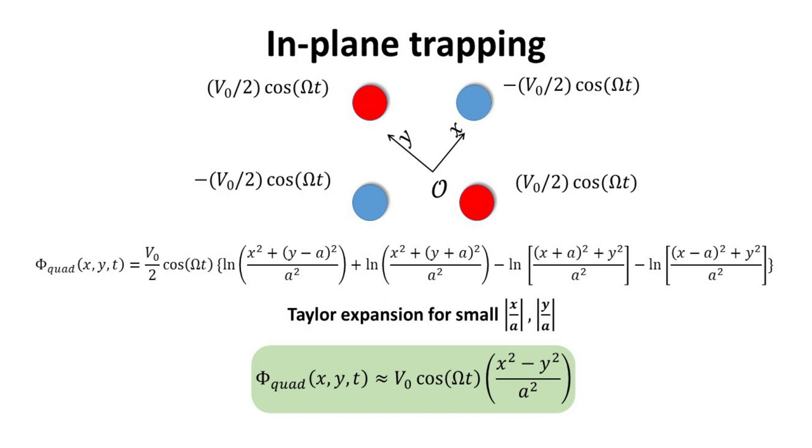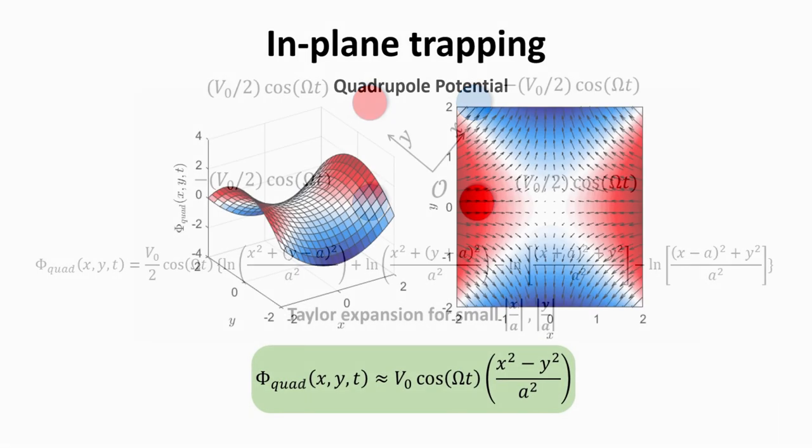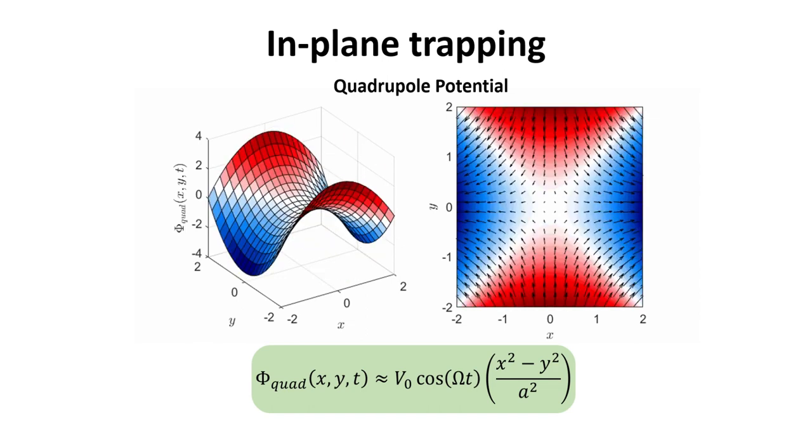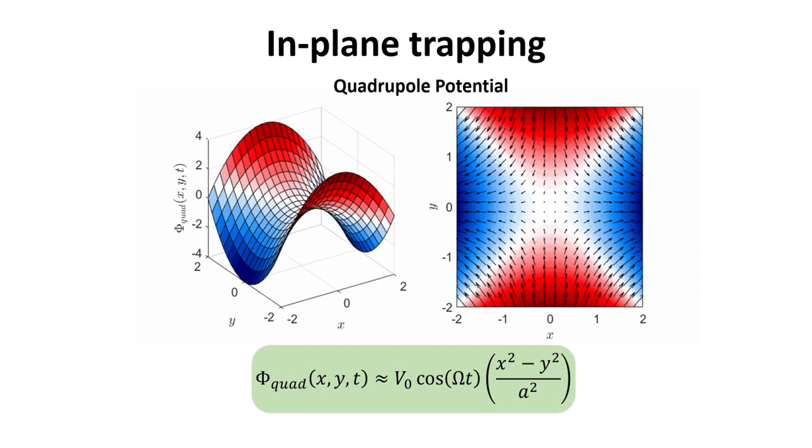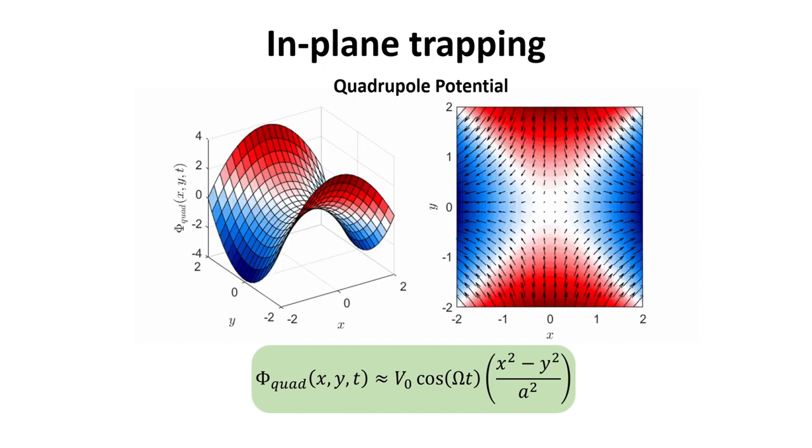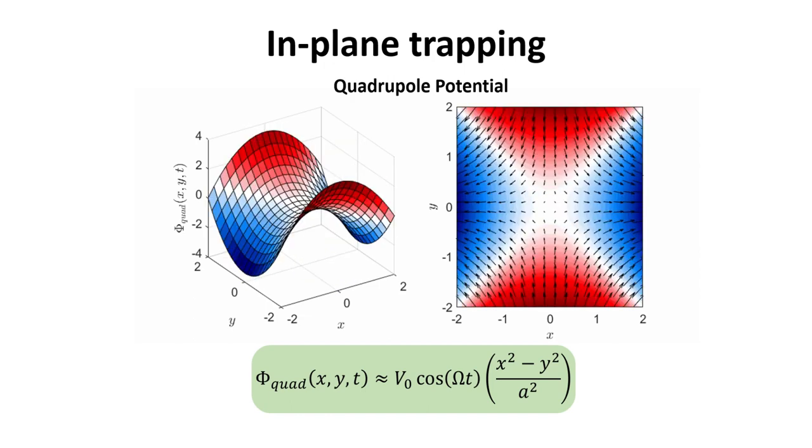Next, we perform a Taylor expansion of Φ quad for small x over A and y over A, that is, small deviations from the origin. This gives us the following potential highlighted in green. Note that the sign difference between the x and y coordinates will give the saddle-like shape to the potential. Here is a plot of the moving saddle potential Φ quad. In what follows, we will show that the equations of motion for a particle in this potential are indeed trapped in the x-y plane.